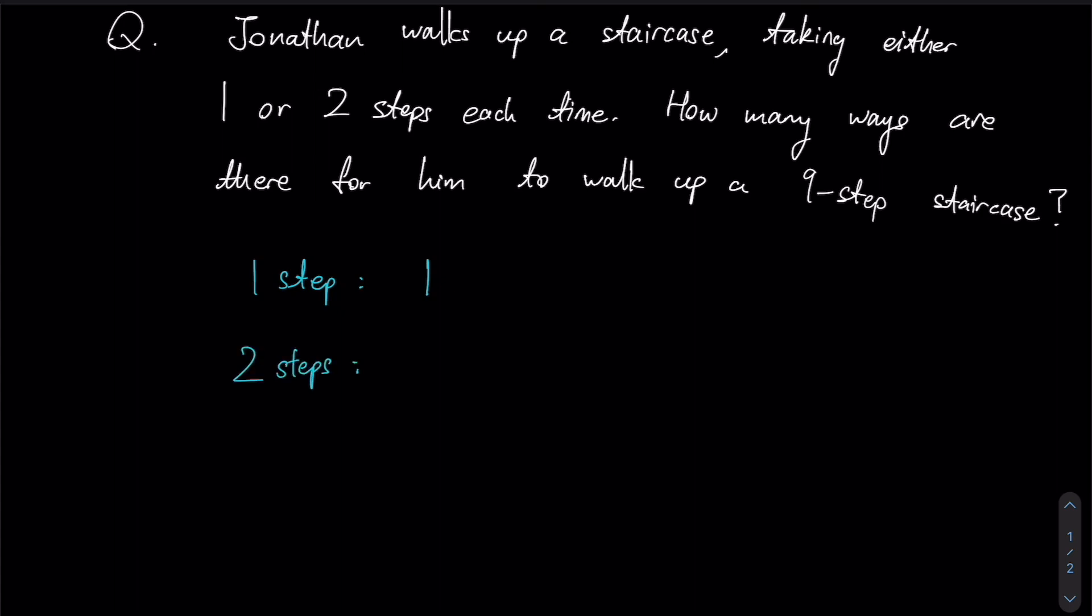Whereas if the staircase now had two steps, he could take either one and one or he could simply complete the staircase in just one time or two steps. So as you can see there are two total ways over here. So over here there's one way, right now there are two ways.